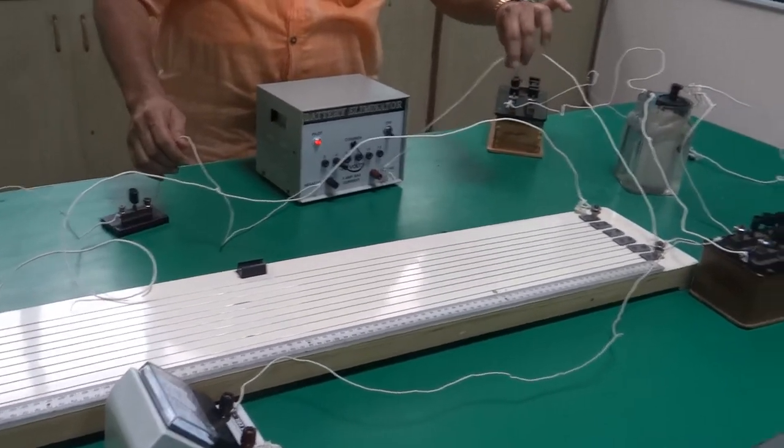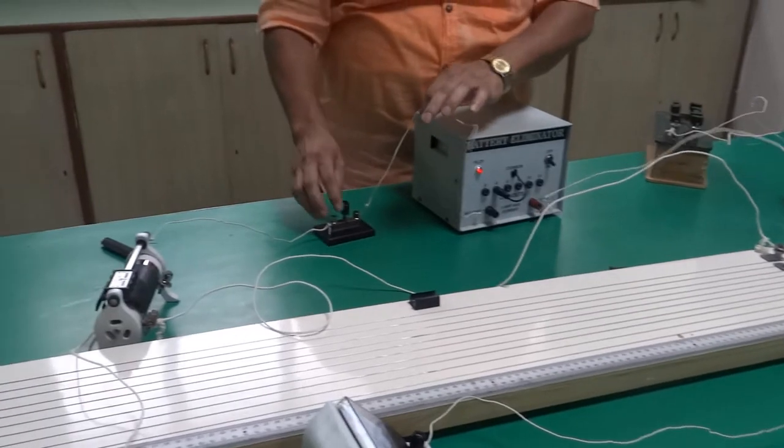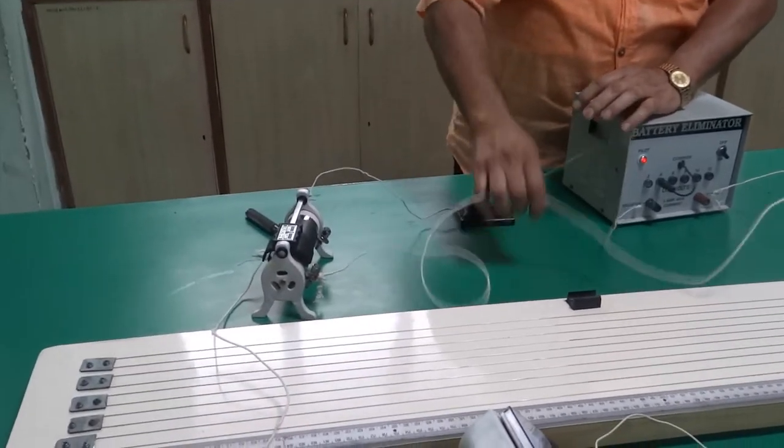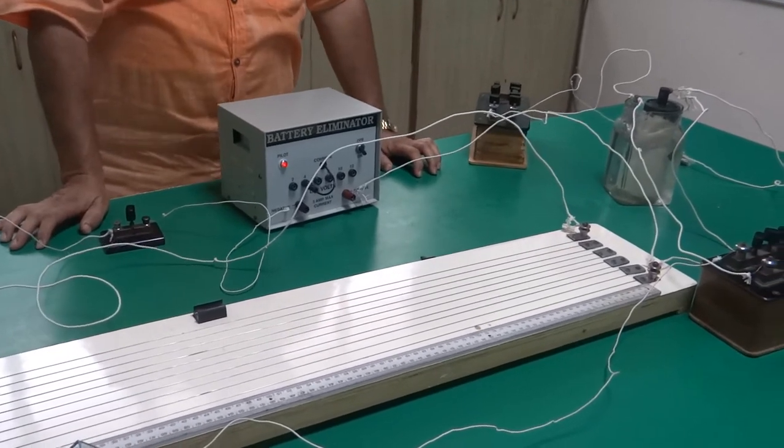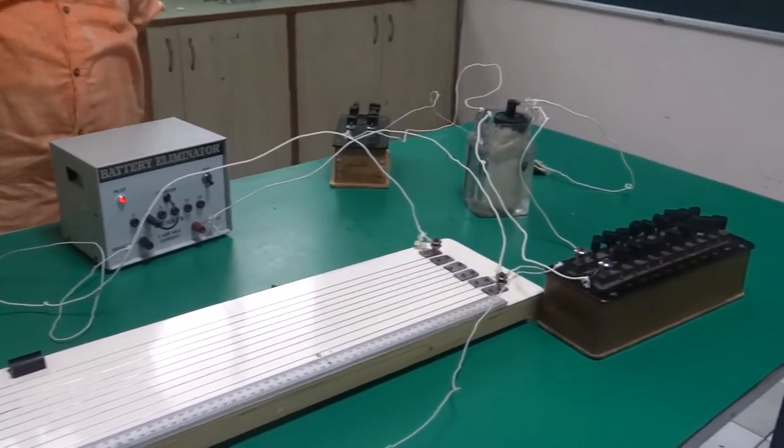You see battery eliminator positive is connected to this end. One is connected to the key and then one to the rheostat. Another end is connected here.